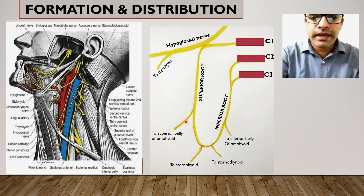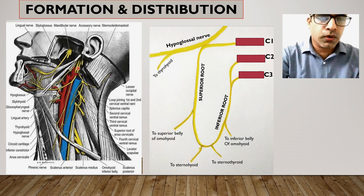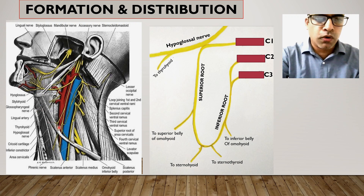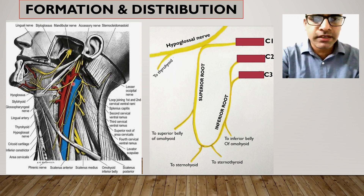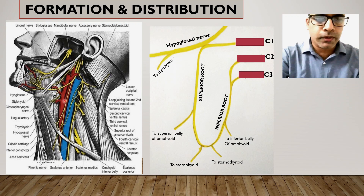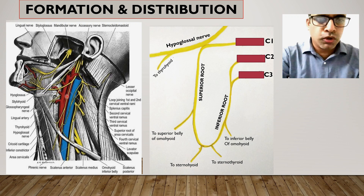The superior root provides a branch that supplies the superior belly of the omohyoid muscle. In this picture, we can see the superior root coming along with the hypoglossal nerve, then descending as the superior root, with its branch supplying the superior belly of the omohyoid. The superior root is initially related to the internal carotid artery and further below becomes related to the common carotid artery.